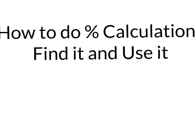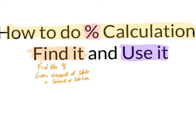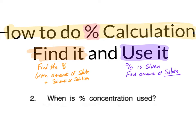Let's look at how to do some of these calculations. There are basically two types: the find it and the use it. In the find it calculations, we're going to be looking for the percentage. In the use it, you're going to be given the percentage, and we're going to use it to find the amount of solute.